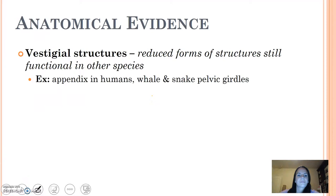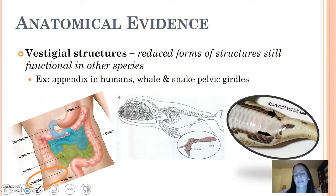Vestigial structures are another form of anatomical evidence. These are forms of structures that are reduced or absent, but are still functional in other species. Think about an appendix in humans — I'm sure all of you know at least somebody that's had their appendix taken out; it really doesn't have a function in humans anymore. Whales and snakes also have pelvic girdles, showing their ancestors had hind limbs.